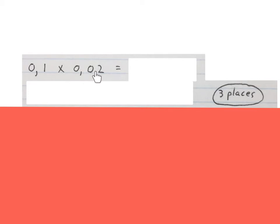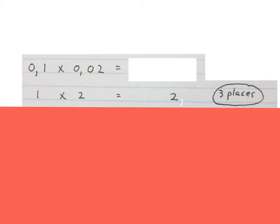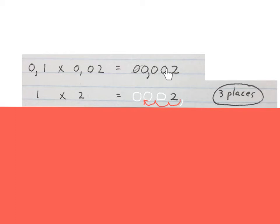Now we take the commas out and do a normal multiplication with these numbers. So you just work out 1 times 2, and that gives you 2. Lastly, we bring back the comma three places from behind. If we take the comma from here, we move it three places. I advise you to add some 0s in front — you can always take them out if you don't need them. We bring the comma in: 1, 2, 3 places. The answer is 0,002. So 0,1 times 0,02 will give you 0,002.